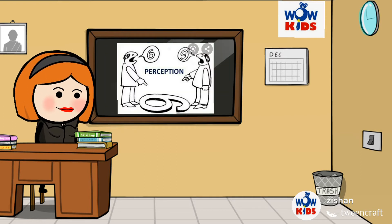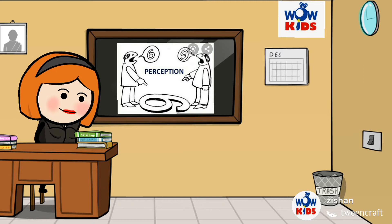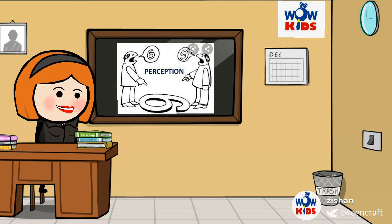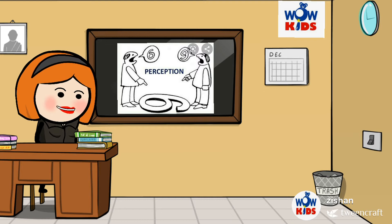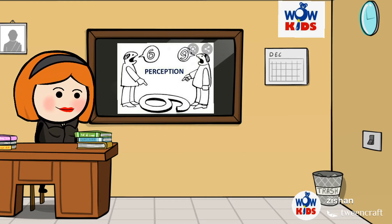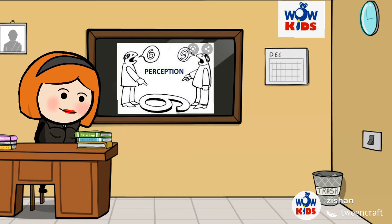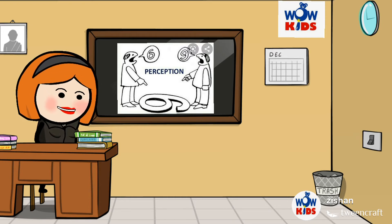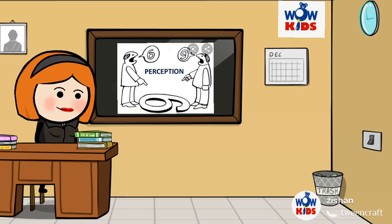I will show you a very interesting example. Look at this picture. In this picture, two men are looking at a number. One man is saying that it is number 6. Another man is saying it is number 9. Both of them are not wrong. It is their different point of view, a different way of looking at the same thing. It is your opinion that creates your perception.